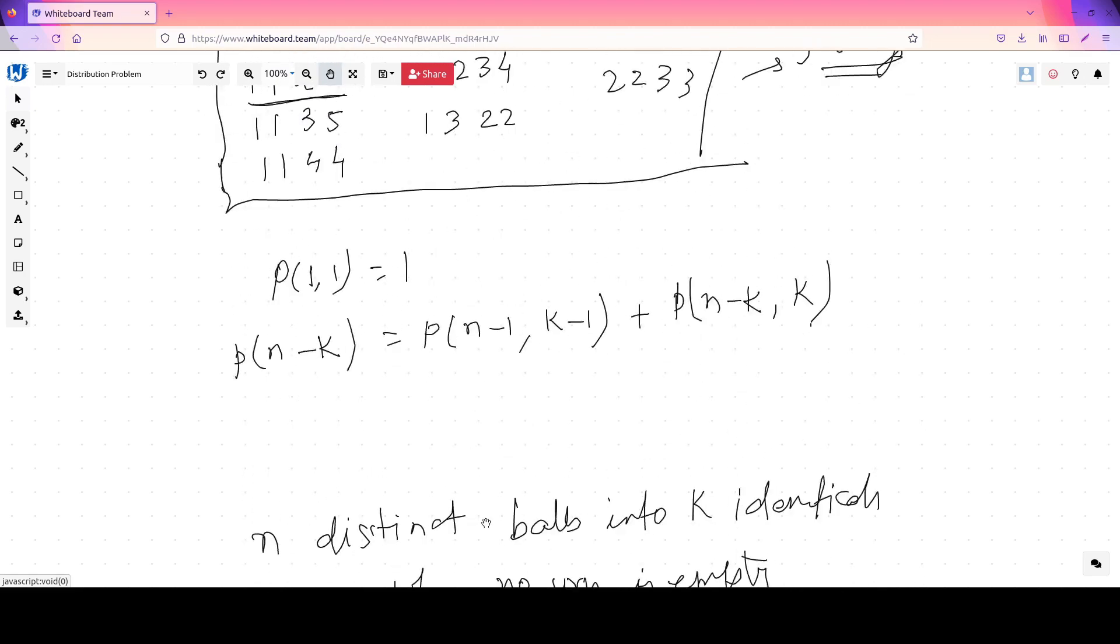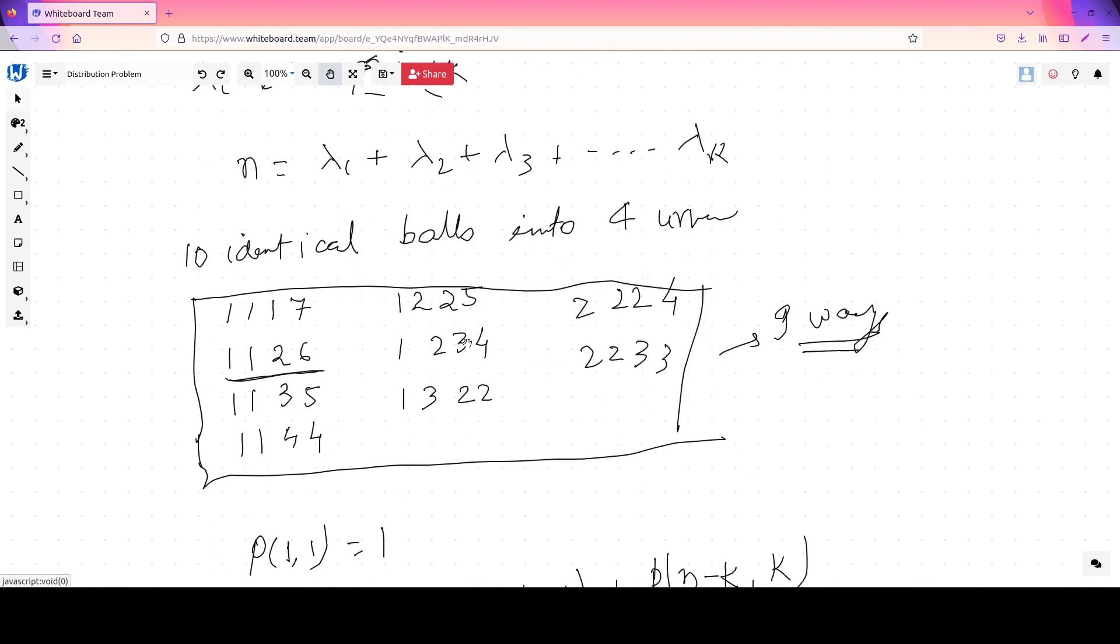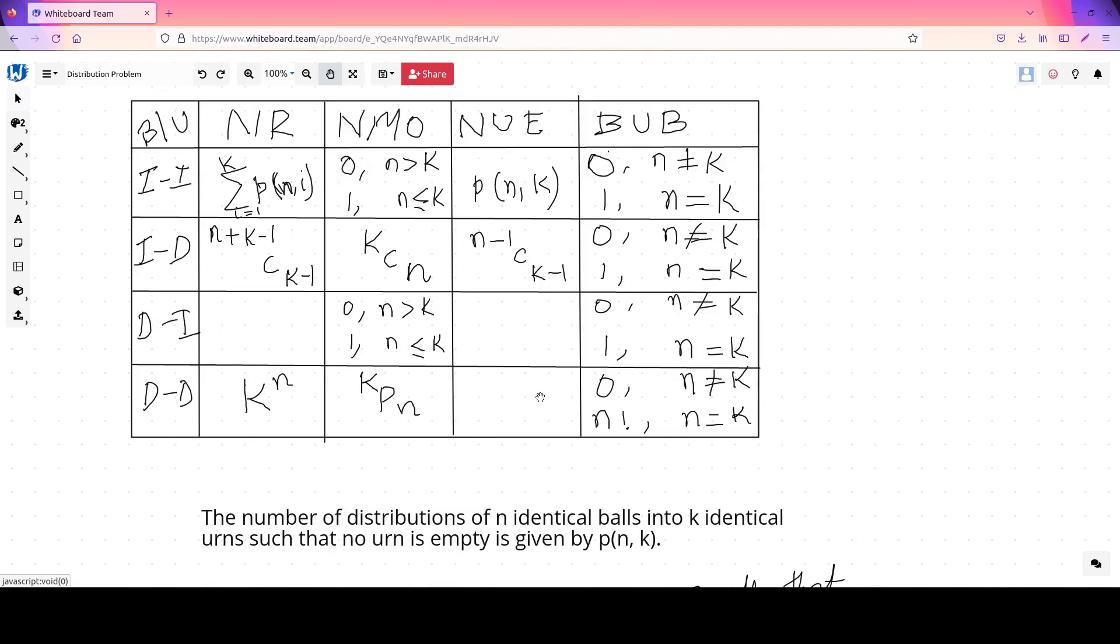Now if the urns are now distinct, you can find that by taking these urns as identical and then since these urns are now distinct, this can be arranged into factorial k ways. So this will be nothing but factorial k times S(n,k). And in case there is no restriction, this formula will end up like i equals 1 to k of S(n,i).